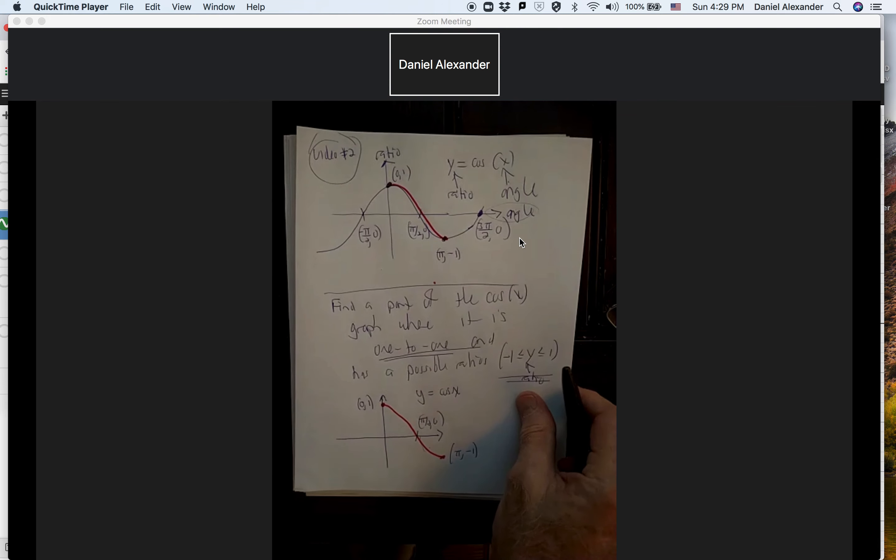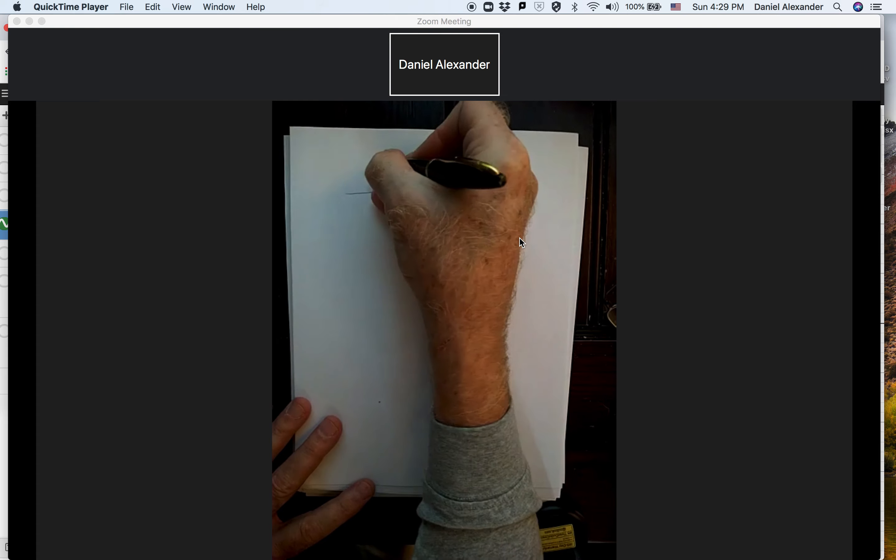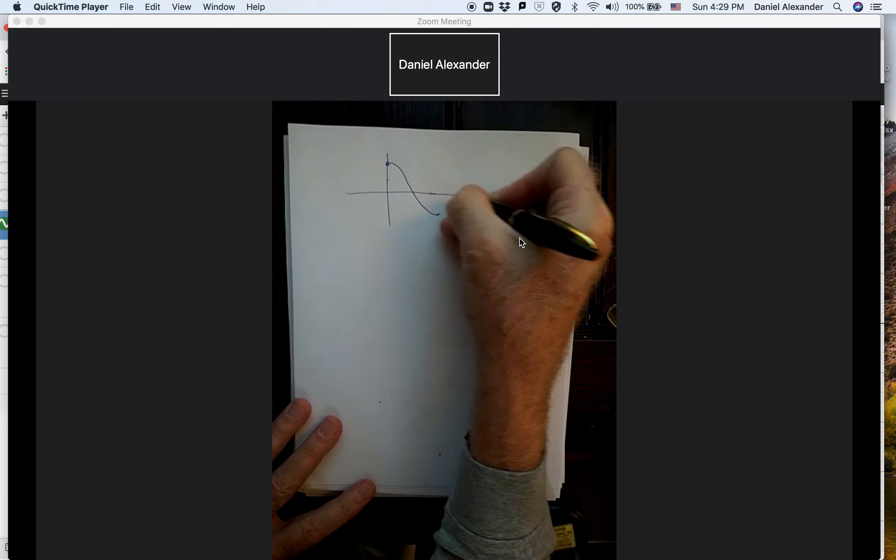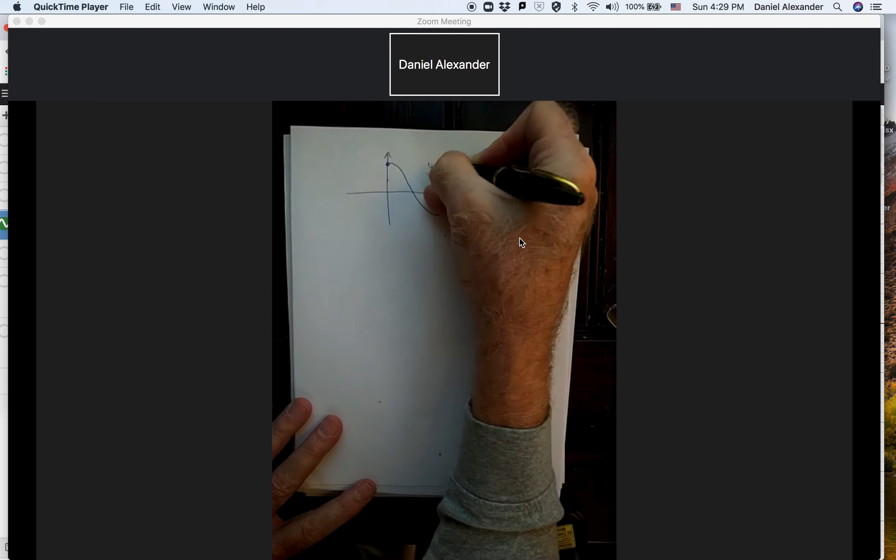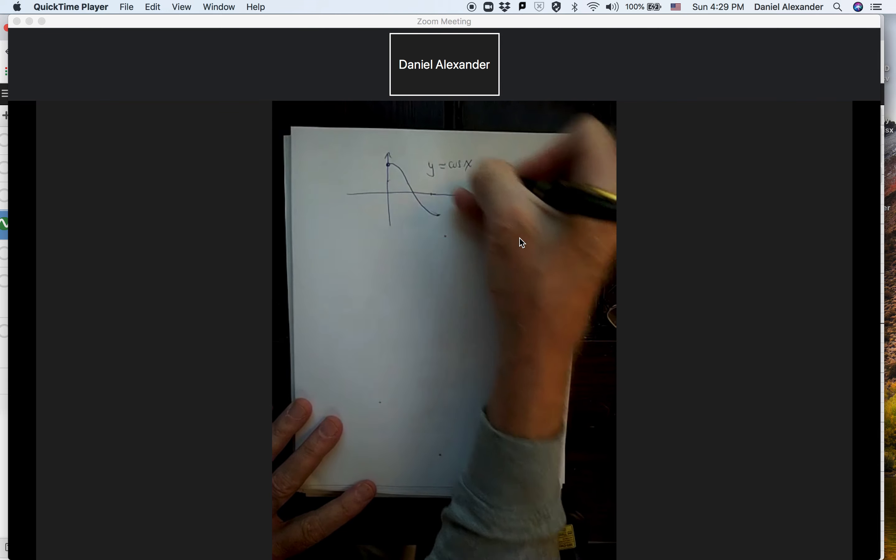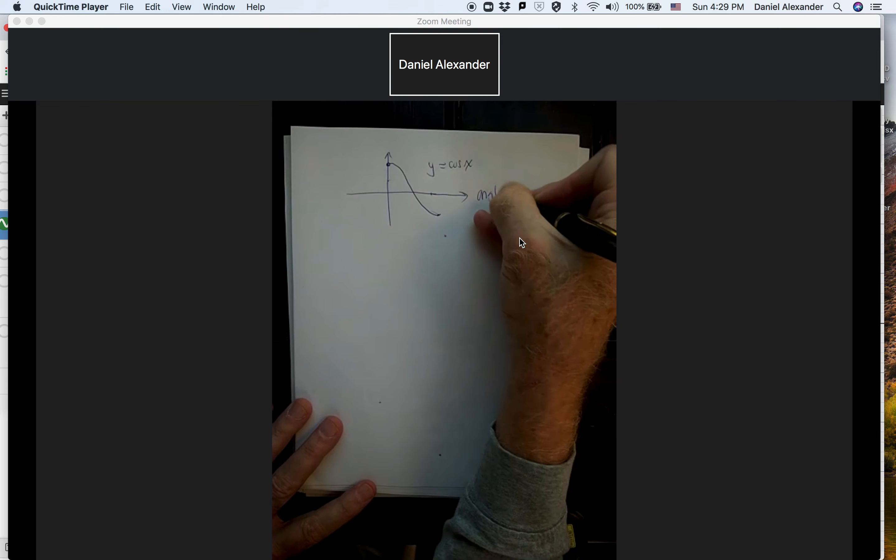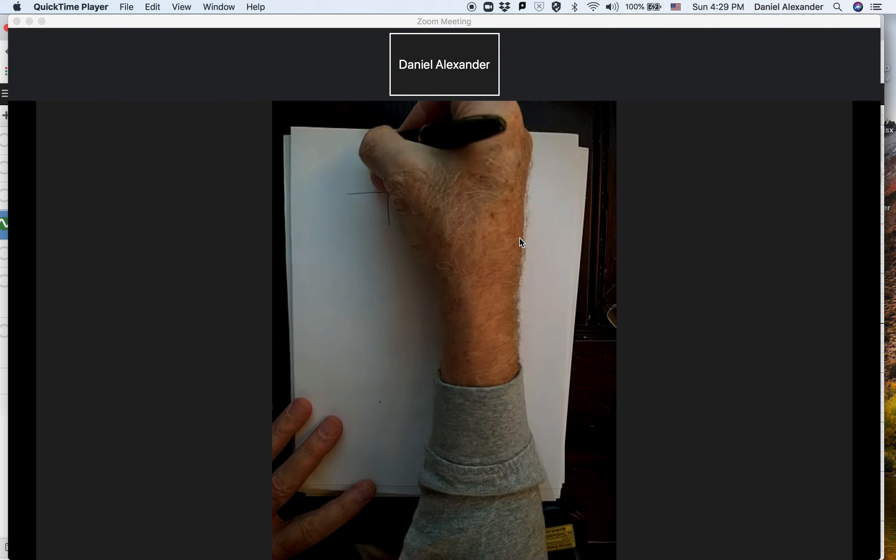We'll go back and look at Desmos too. Okay, so here's what we have. Here's the principal part of the cosine, which we're going to invert. So we're still talking about the cosine. X is going to be an angle.